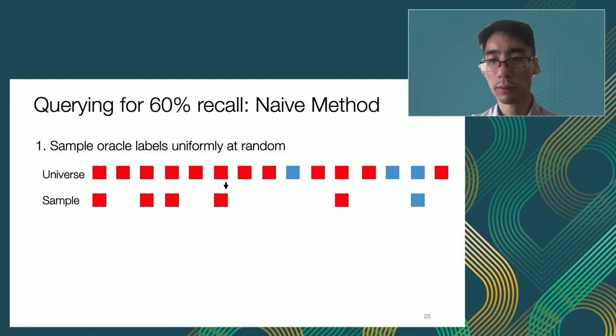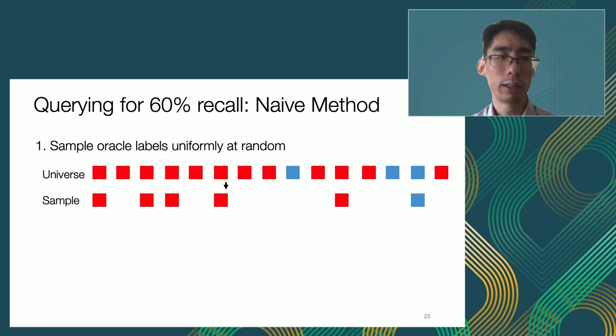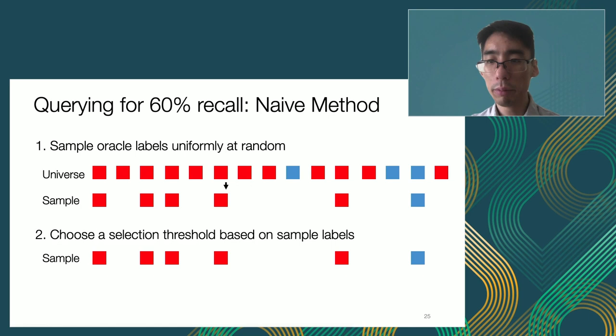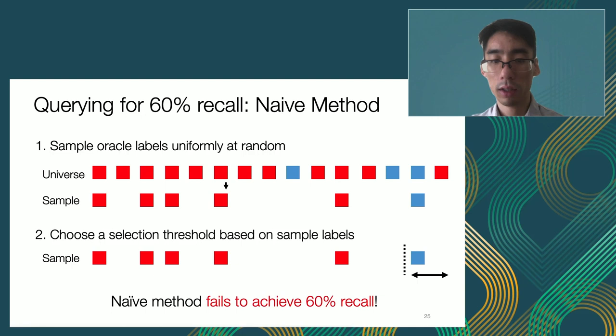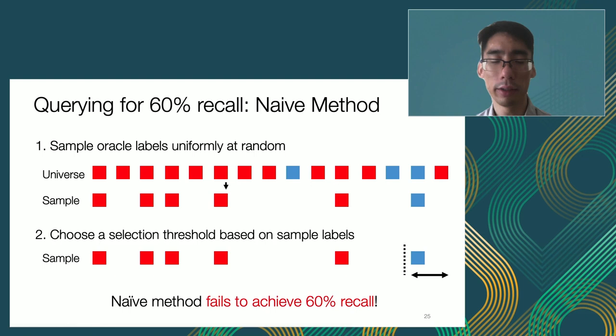The naive methods of using proxies can fail to achieve statistical guarantees. As an example — we have all the data records and a sample, and we choose a selection threshold. In the sample, 60% recall would be achieved by drawing the threshold there and returning everything above it. Unfortunately, because of the variance in sampling, this would only return a recall of 33%, which does not satisfy the recall target. This holds more generally, as I'll show in our evaluation.